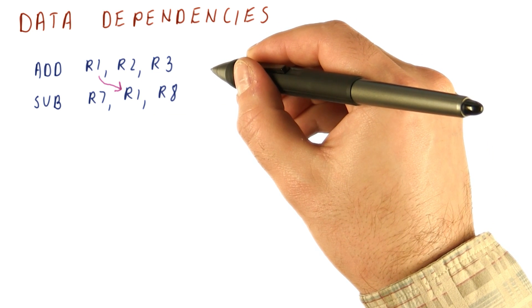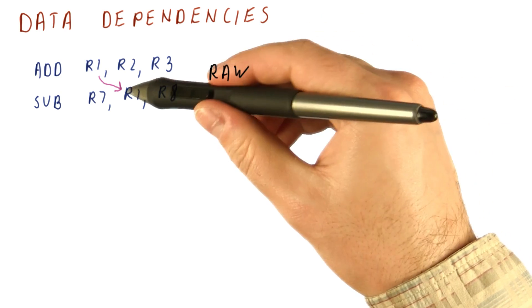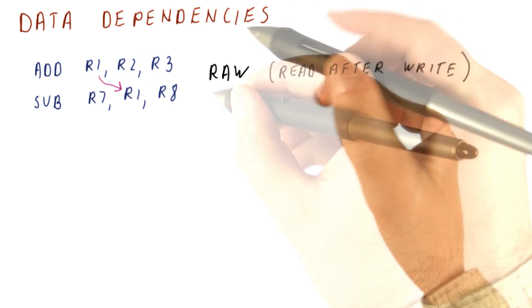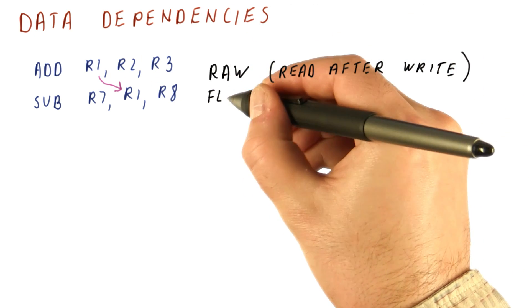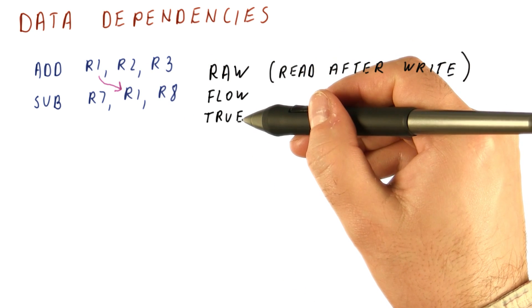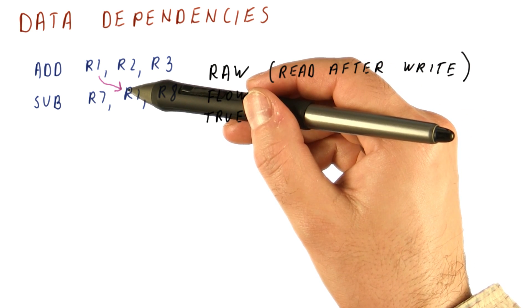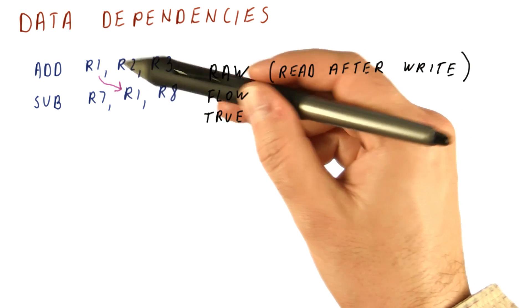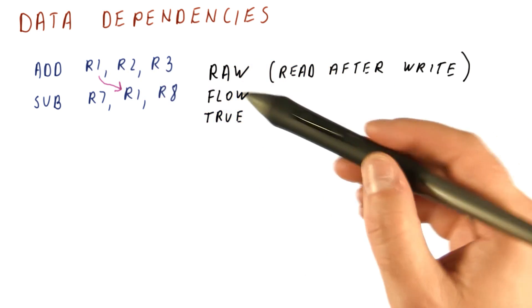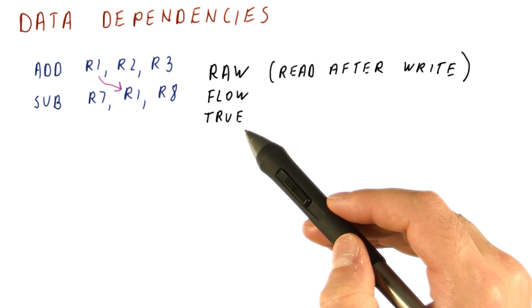This type of data dependence is called a read after write dependence. We read something after it has been written and that order needs to be preserved. This type of dependence is also called flow dependence, because the data flows from one instruction to the other. And it is also called true dependence, because there is really a dependence - the subtract needs the add to finish before it because the value doesn't exist until the add is finished. So again, this type of dependence is called RAW or read after write or flow or true dependence.